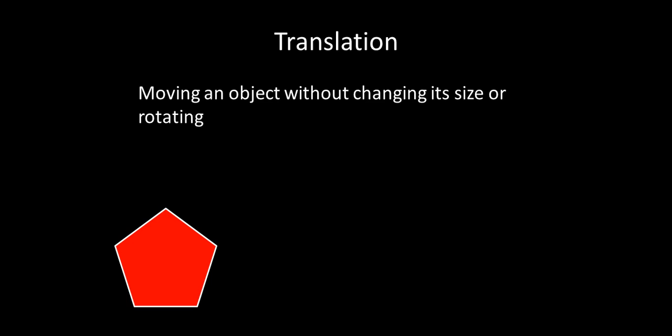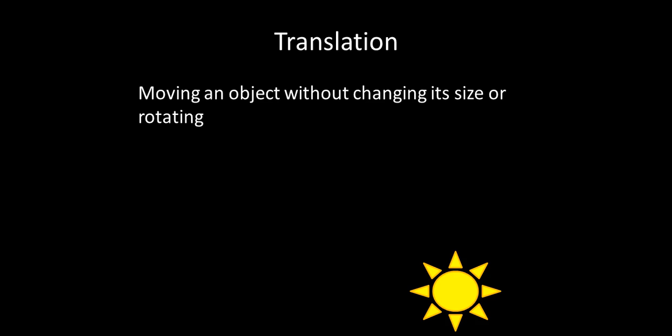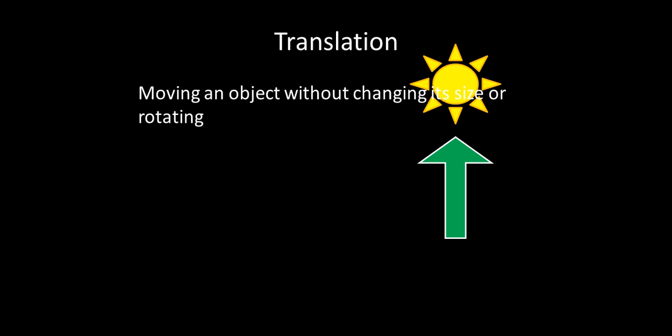Here's another example with the pentagon. We're going to go ahead and slide it over to there. That's a translation. So the translation is when you move an object without changing its size or rotating it. Here's our final example. We have the sun. We're just going to move it up to the top. So that's several examples of translation. You can translate on a graph. You can translate on a screen just like this. When you translate something, you're just moving it.